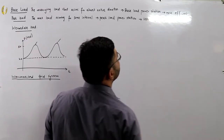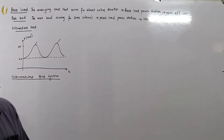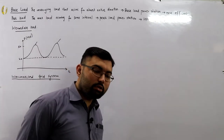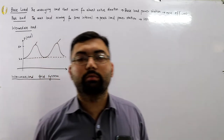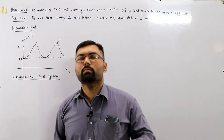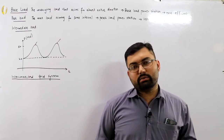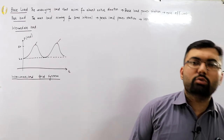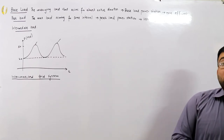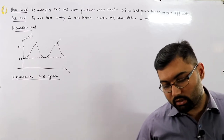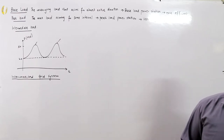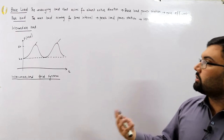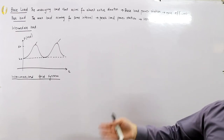If you have two power stations, the more efficient one is treated as the base load power station and the less efficient one as the peak load power station. We commonly have either a steam power station or a hydro power station, and both can serve as base load or peak load stations depending on conditions, not just efficiency.